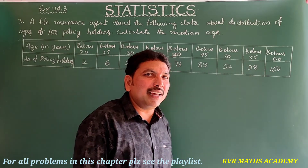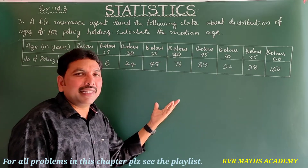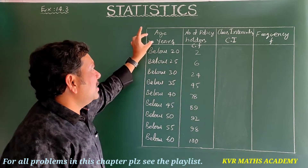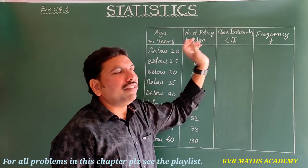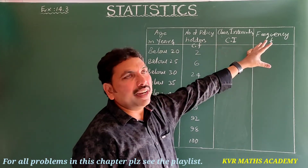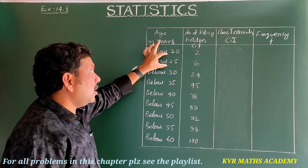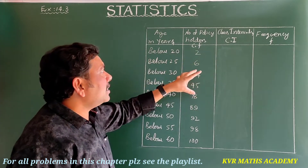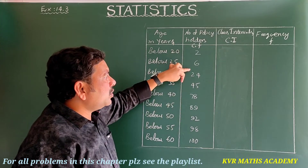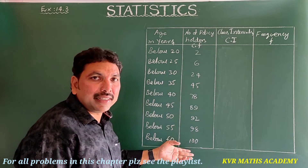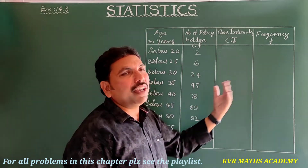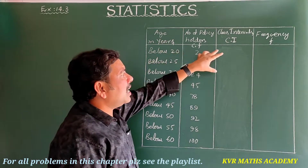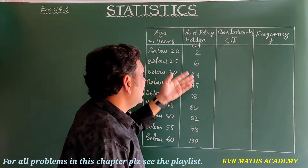From the given data I draw a table with class intervals, frequency, and cumulative frequency. The cumulative frequencies given are 2, 6, 24, 45, 78, and so on. From these, I derive the class intervals and corresponding frequencies.